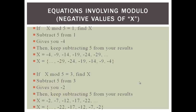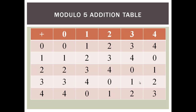Now let's look at the modulo 5 addition table. For example, 2 plus 3 equals 5, but you cannot get 5 in mod 5 — since mod 5 wraps around, 5 mod 5 equals 0. If 4 plus 4 is 8, then 8 mod 5 gives 3, because 8 divided by 5 is 1 remainder 3. If 2 plus 2 is 4, then 4 mod 5 is still 4.